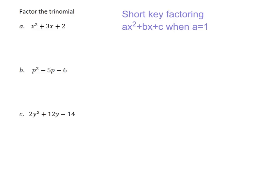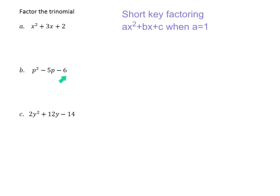There are a lot of letters here, so let me go through and show you what I'm talking about. You can see that this is 1x squared plus 3x plus 2, so a — the number in front of x squared — would be 1, b — the number in front of x — would be 3, and c would be 2. Similarly, down here, a would be 1, b would be negative 5, and c would be negative 6.